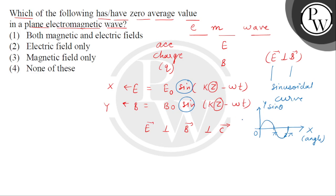So, both fields - electric field and magnetic field - will have zero average value. The correct answer is option 1. Thank you.